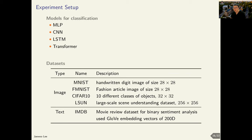Here we compare the performance of our proposed method against baseline algorithms on different neural network architectures and datasets. We consider multi-layer perceptron, convolutional neural network, LSTM, and transformer network. For datasets, we use MNIST, Fashion MNIST, CIFAR-10, and the IMDB movie review dataset.